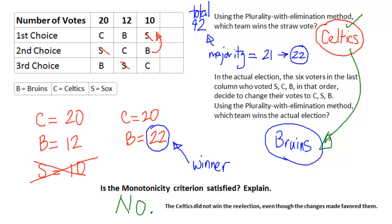Let me just finish this video by saying this. If the Celtics had won the re-election as they did in the straw vote, then we would answer yes, the monotonicity criterion is satisfied.